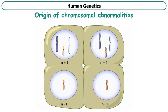At the end of meiosis, all gametes that derived from this cell are abnormal, containing n+1 or n-1 chromosomes instead of n chromosomes.